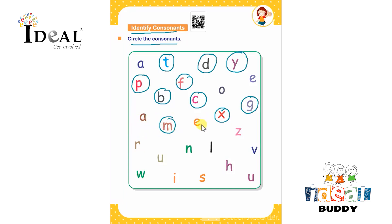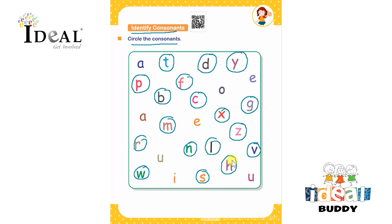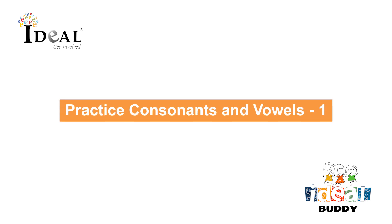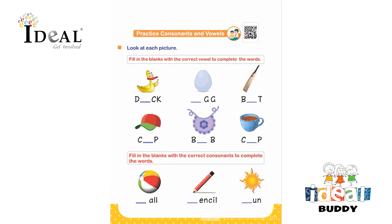We are not encircling A and E because they are vowels. The remaining ones are not consonants — they are vowels. Here we have to identify the consonants.